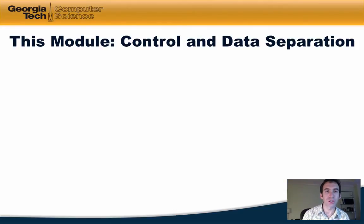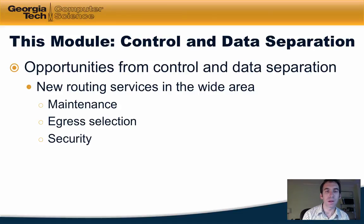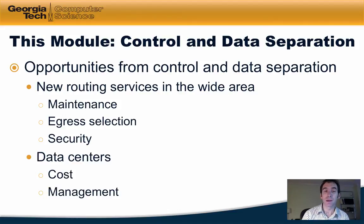We're continuing our discussion of the benefits of control and data plane separation. In this lesson we'll talk about opportunities from control and data plane separation in terms of two examples: new routing services in the wide area in terms of maintenance, egress selection, and security, and the second is benefits in data center networks in terms of cost and management.